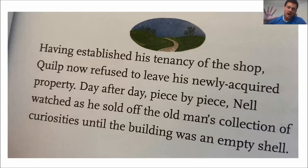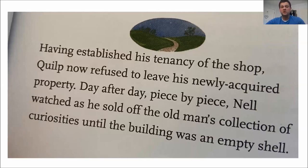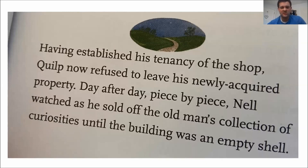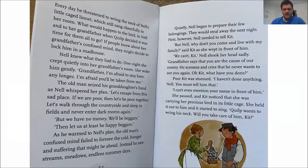This is the first event after they've said the shop is theirs. Having established his tenancy of the shop — that's a complicated way of saying Mr. Quilp now owns the shop — he refused to leave his newly acquired property. Day after day, piece by piece, Nell watched as he sold off the old man's collection of curiosities until the building was an empty shell. Every day he threatened to wring the neck of Nell's little caged linnet — the little bird — which still sang cheerfully in her room. What would happen to the bird, to Nell, and to her grandfather, when Quilp decided it was time for them all to go?